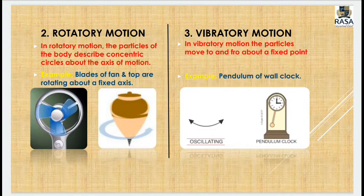In vibratory motion, the particles move to and fro about a fixed point. In a wall clock with a pendulum, the pendulum moves left and right — to the extreme left and then to the extreme right — and this is vibratory motion. In musical instruments like sitar and guitar, the strings vibrate about their mean position when plucked. Even in a seesaw, one student goes up while the other goes down, and then vice versa — this is also vibratory motion.